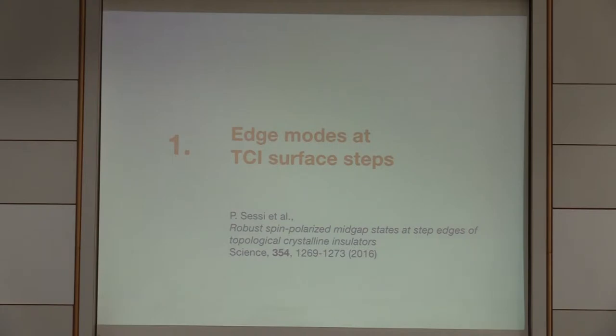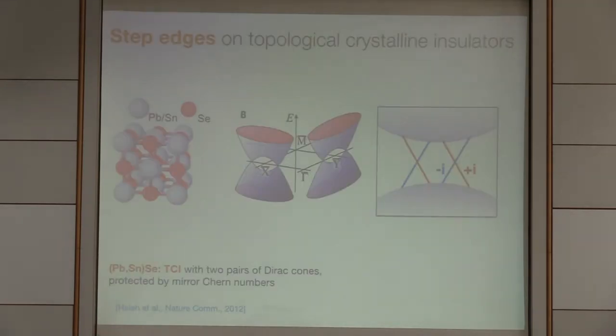Let me start with item number one, these edge modes and topological matter that have been observed already in experiments. The systems we look at are topological crystalline insulators. You've heard already a lot today about topological insulators which carry a single Dirac cone on their surface. But there's also materials where crystal symmetries protect more than one Dirac cone. On the surface of this material, you can find four Dirac cones which are protected by mirror symmetries, by mirror Chern numbers.